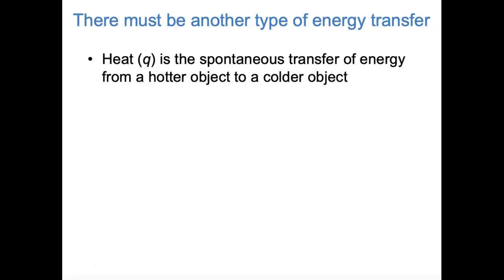That question requires a concept we hadn't talked about yet. In order for a gas to do work on its surroundings but not lose any of its total energy, there must be another type of energy transfer to the gas compensating for the work done. This other type of energy transfer is heat, which we represent with the letter Q. Heat can be defined as the spontaneous transfer of energy from a hotter object to a colder object. In the isothermal expansion of an ideal gas, heat is actually being transferred to the gas in order to keep it from getting colder—energy is being transferred, but that energy isn't necessarily making the system a higher temperature.